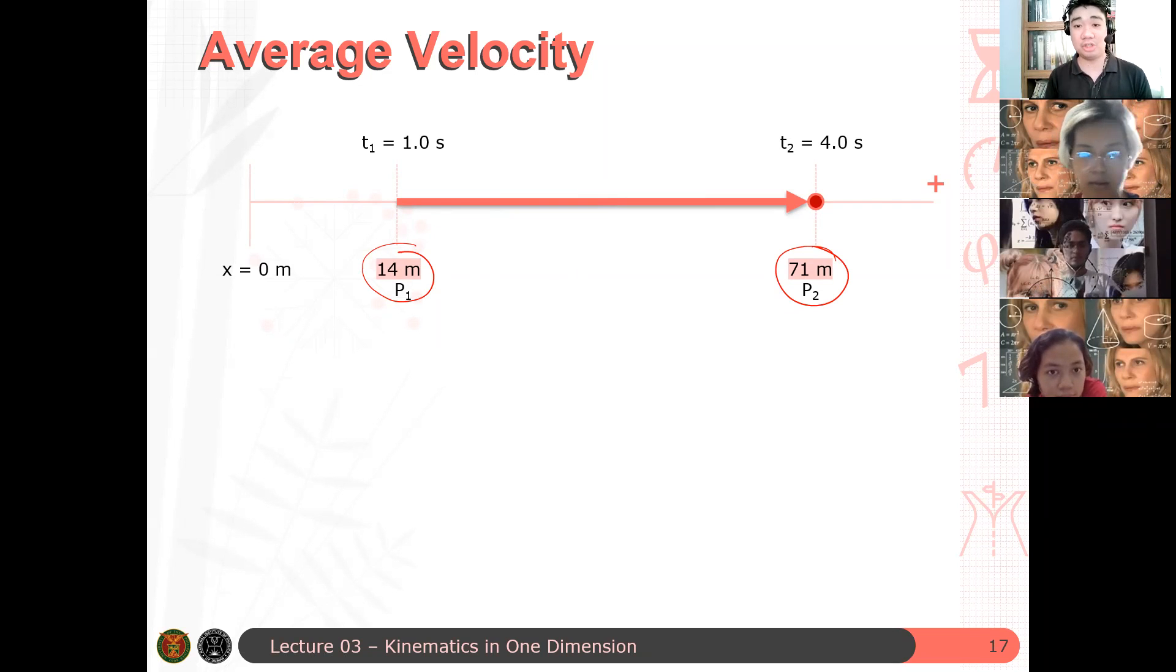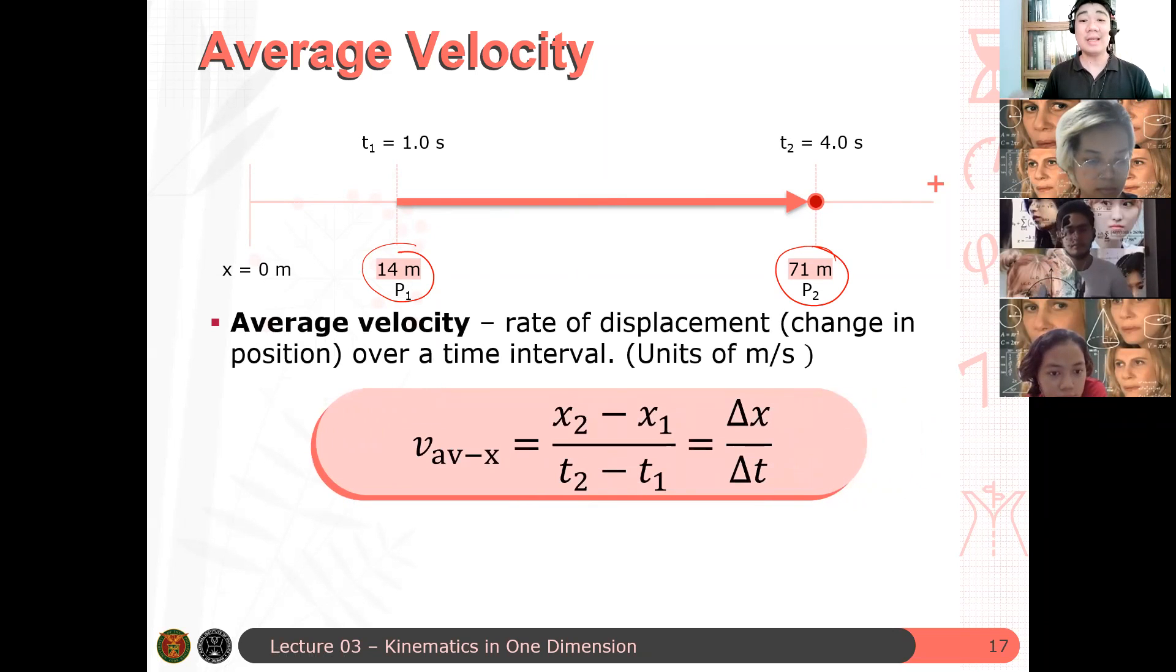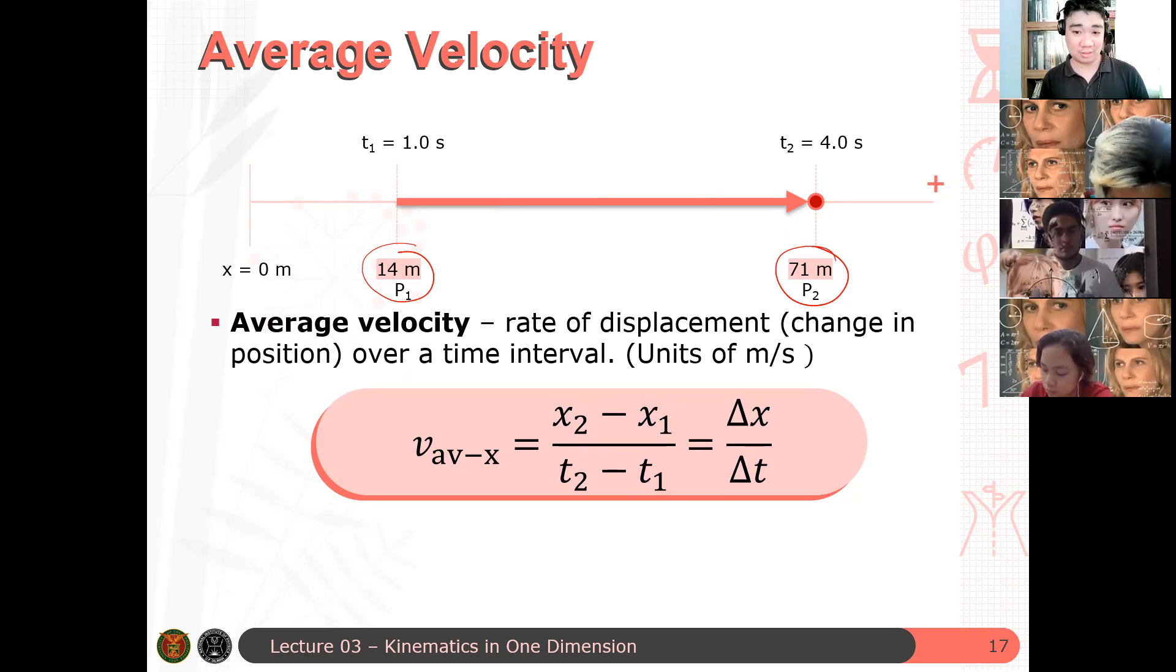So the average velocity is the rate of displacement over time. So we can compute the average velocity such that it's just the difference of the displacements over the difference in time. So delta, sorry, difference in positions, sorry for that, difference in displacement. Difference in positions, which is your displacement over the time interval, which is the difference in time.